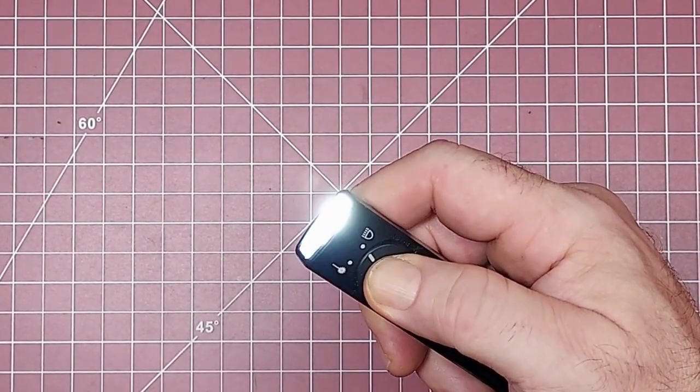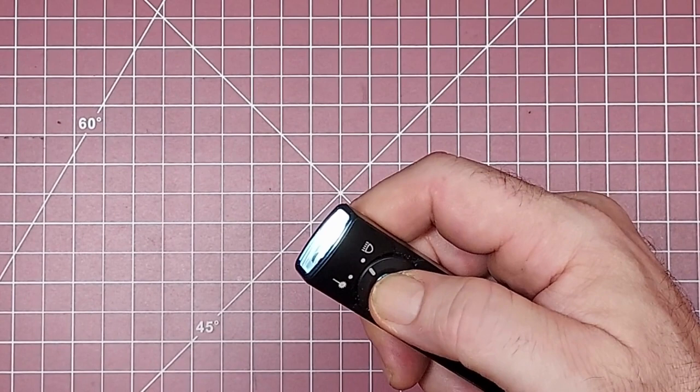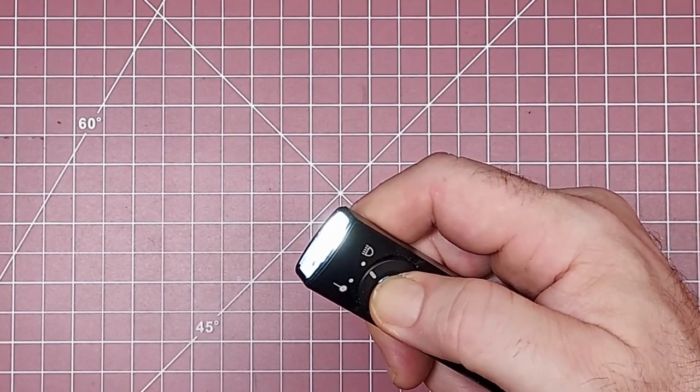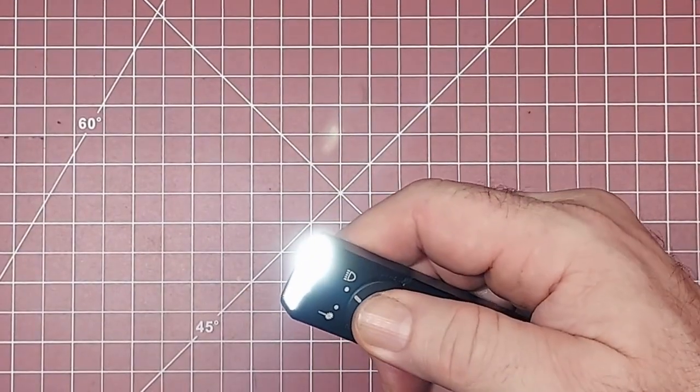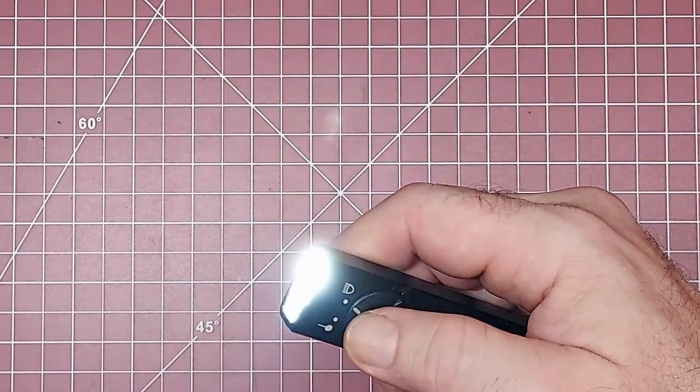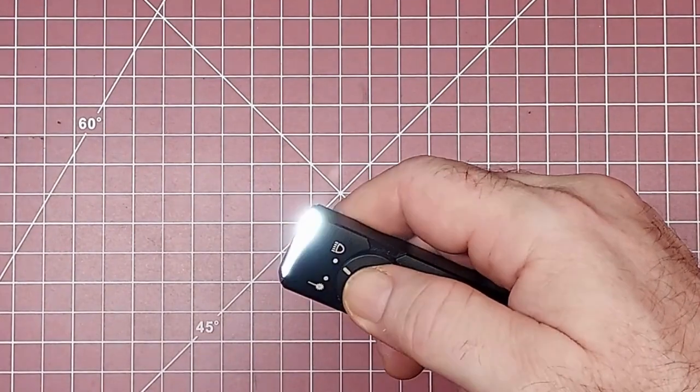From there, low, medium, high, low, medium, high. And then there's turbo, double click for turbo, triple click for flash. A lot of people don't know that these will even do that.